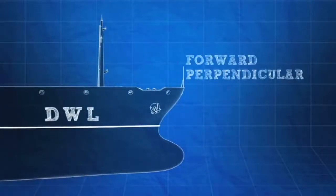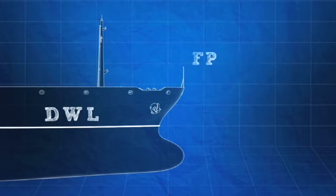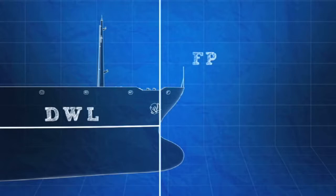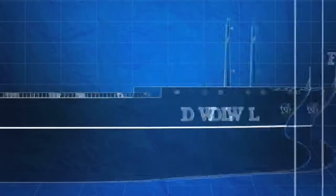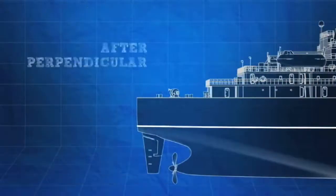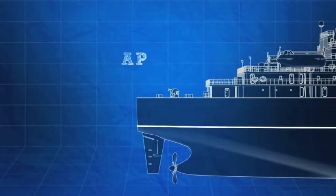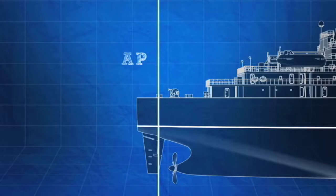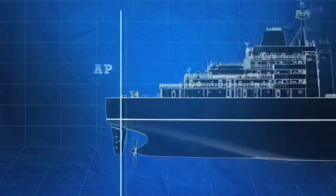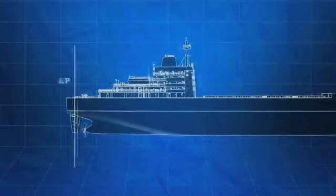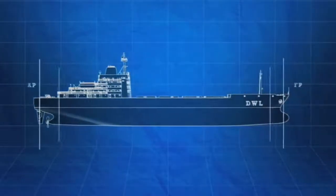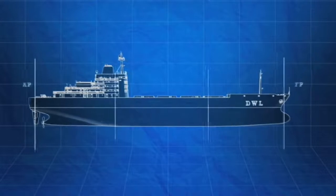The forward perpendicular, or FP, is a vertical line drawn at the intersection of the design waterline and the foreside of the stem of the hull. The after perpendicular, or AP, is a vertical line drawn at the intersection of the design waterline and the aftmost point of a ship's hull. For most commercial vessels, this is generally where the rudder post is located.